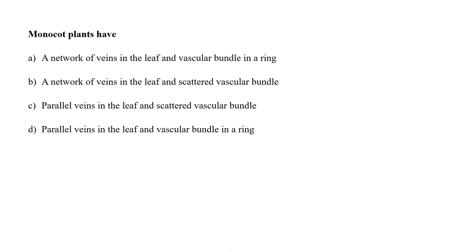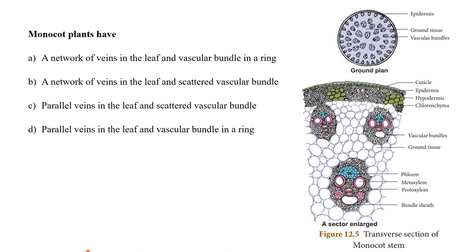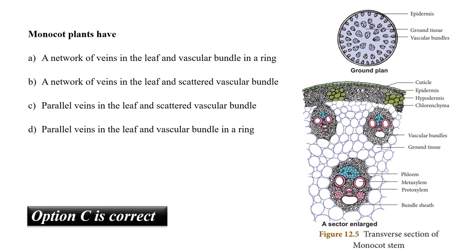Monocot plants have A. a network of veins in the leaf and vascular bundle in a ring, B. a network of veins in the leaf and scattered vascular bundle, C. parallel veins in the leaf and scattered vascular bundle, or D. parallel veins in the leaf and vascular bundle in a ring? Monocots have parallel venation, while dicots have reticulate venation. The vascular bundles of monocot plants are scattered, with xylem and phloem separate. So the correct answer is option C.